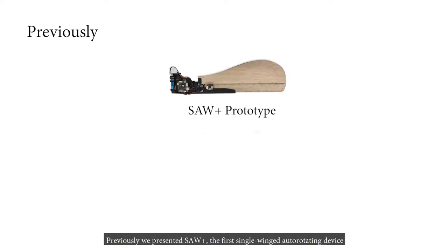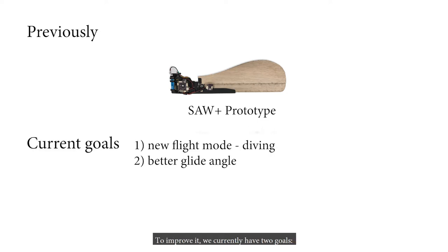Previously, we presented Saw Plus, the first single-winged autorotating device with directional controls using a single flap. To improve it, we currently have two goals: a new flight mode for tough wind conditions and to have a better glide angle.